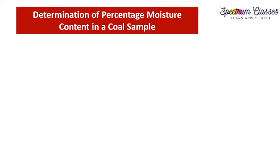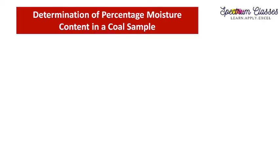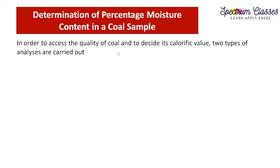This experiment is given in the BTEC first year engineering chemistry syllabus of Uttarakhand Technical University. There are three different experiments given in their syllabus, and we are going to discuss all three one by one. So here we are going to discuss the determination of percentage moisture content in the coal sample. Why is it important? In order to assess the quality of coal and to decide its calorific value, two types of analysis are carried out.